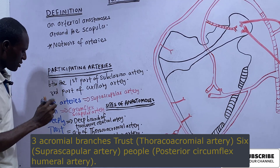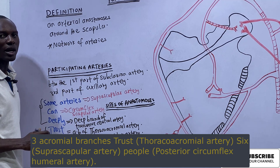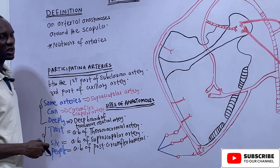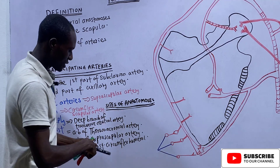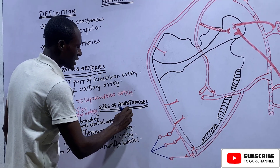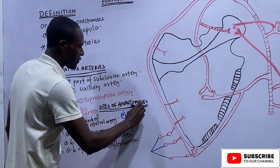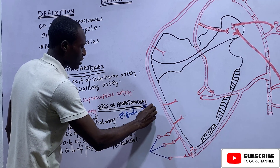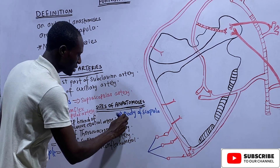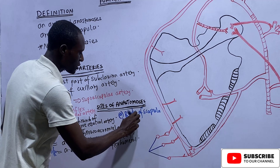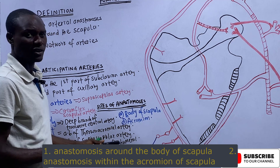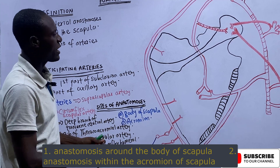The first three arteries are anastomosing within the body of the scapula, and the last three arteries give rise to acromial branches that anastomose at the acromial process of the scapula. So there are two sites of scapular anastomosis: the anastomosis around the body of the scapula, and the anastomosis around the acromial process.